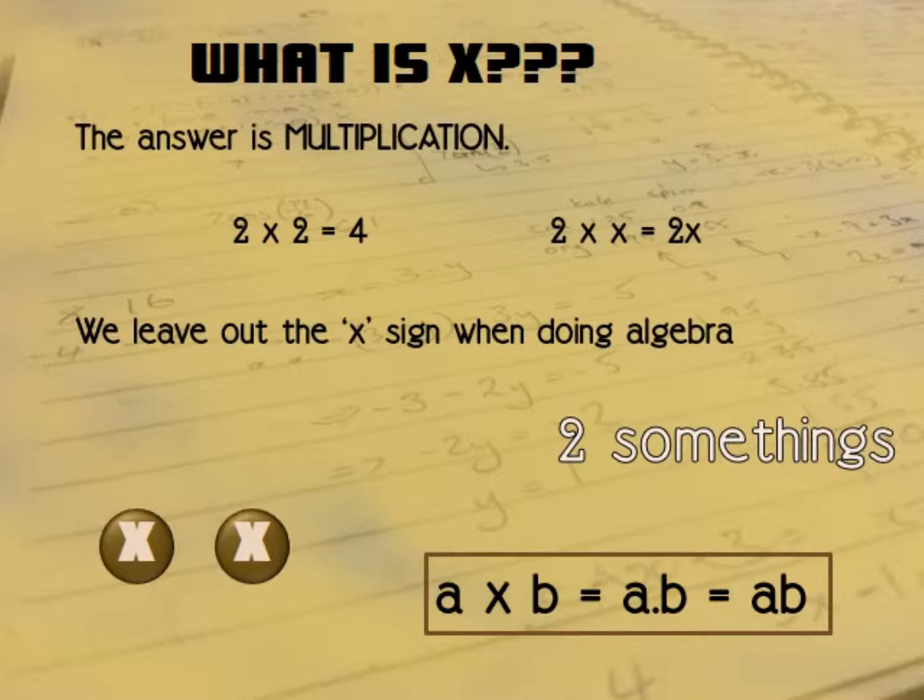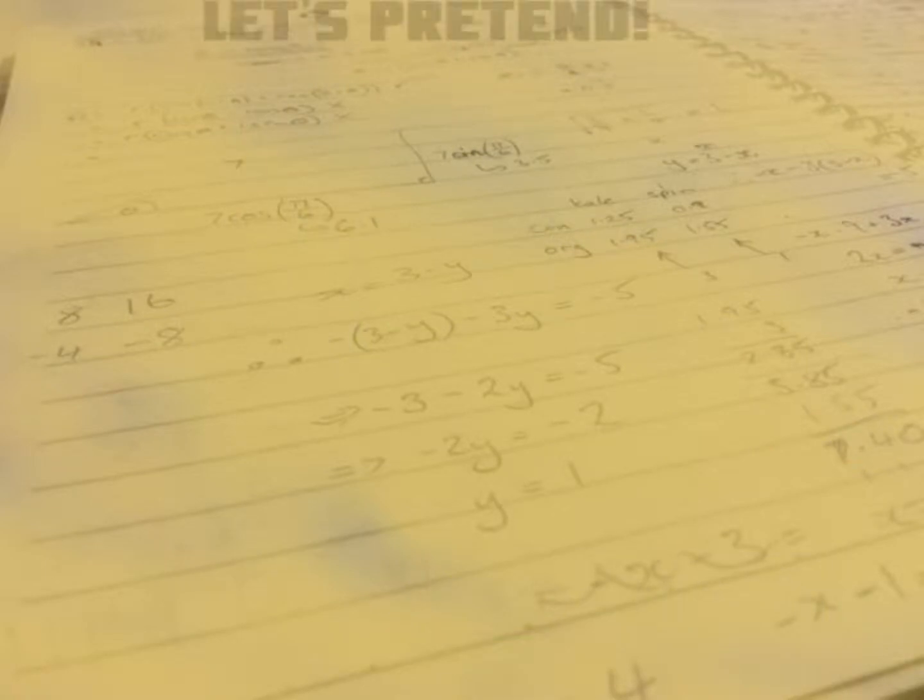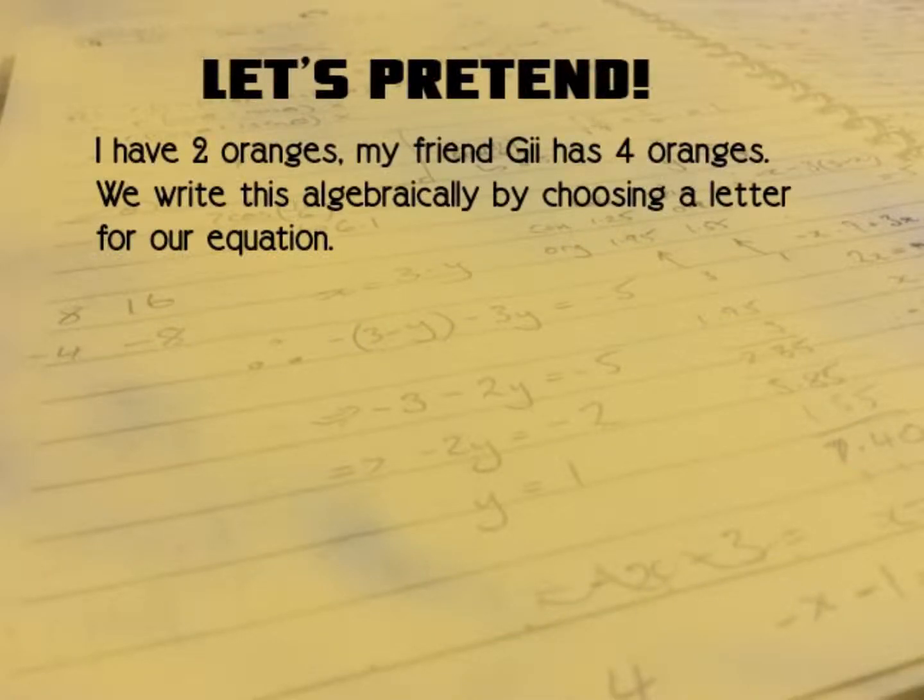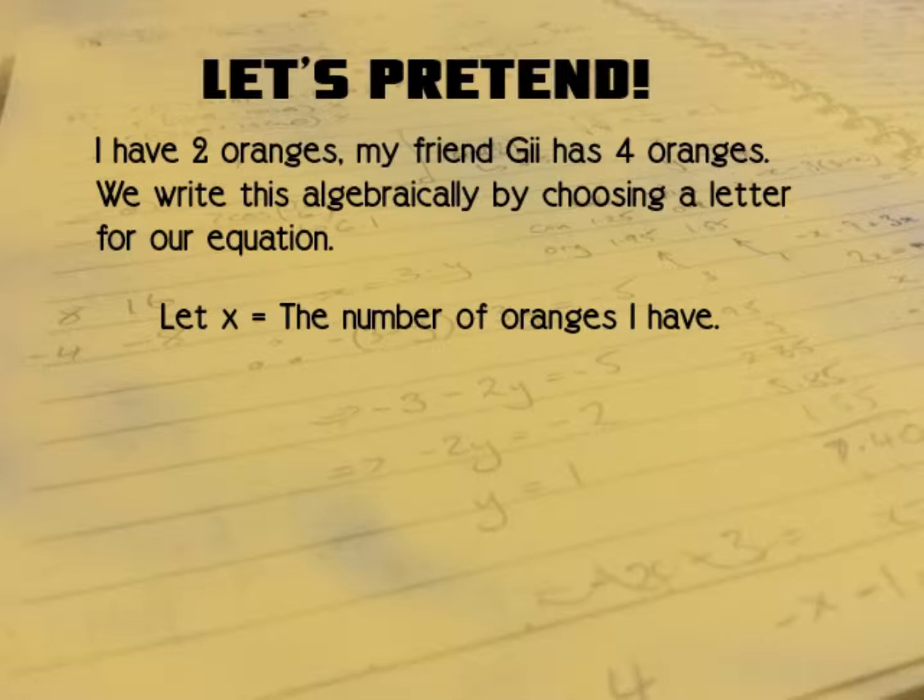We're just going to do a quick example to give a little bit more information. I have two oranges. My friend Gil has four oranges. We write this algebraically by choosing a letter for our equation. Let's stick with X to start with. Let X equal the number of oranges I have. So we are saying, okay, let's take a letter X. And that letter is a number. And that number is the same as the number of oranges that I have.